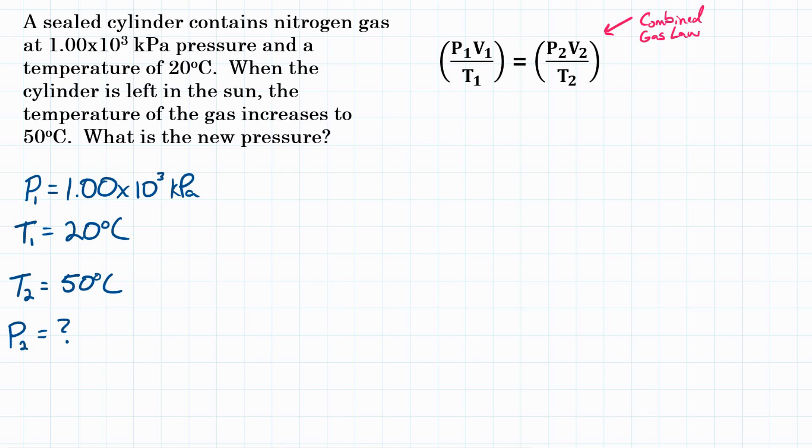Now this is a gas law problem and it's specifically going to be Gay-Lussac's law that we'll be using, but if you don't know that specific law by heart, you can always start with the combined gas law. P1 times V1 over T1 equals P2V2 over T2. In this problem, we don't know anything about volume. It must not be changing. This cylinder must be a fixed volume.